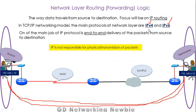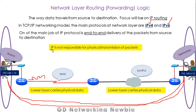However, IP is not responsible for the physical transmission of packets — meaning the 0s and 1s. Carrying the 0s and 1s over a medium is not the responsibility of IP. The lower layers — the data link layer and the physical layer — have the responsibility to carry the data using that medium.